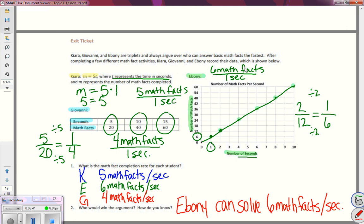So we were able to find a unit rate coming out of an equation here. Found the unit rate for Ebony out of the graph. And for Giovanni, we found the unit rate coming out of a ratio table.